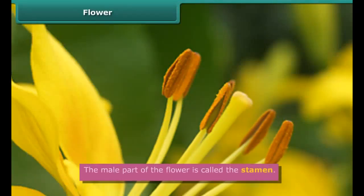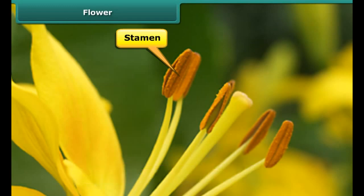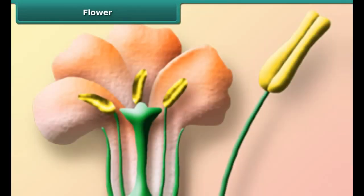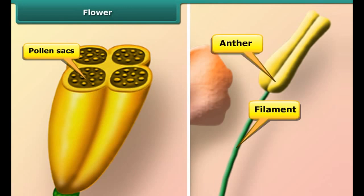The male part of the flower comprises one or more stamens. Each stamen is a stalked structure. The stalk is called the filament. Atop the filament are two sacks containing pollen. These sacks are known as anthers.